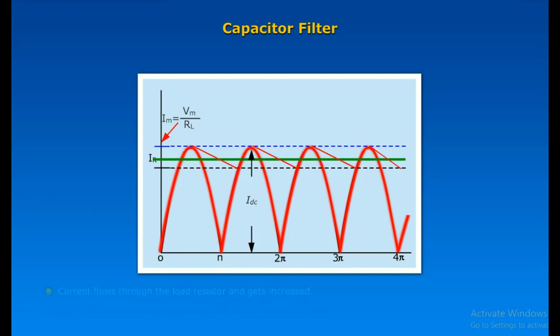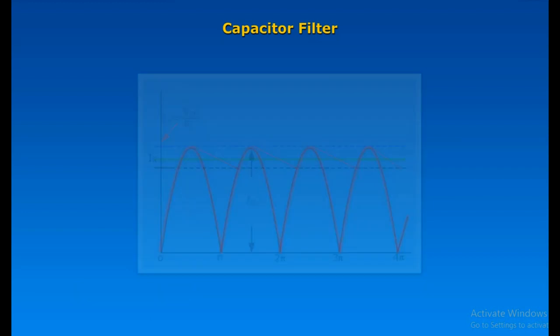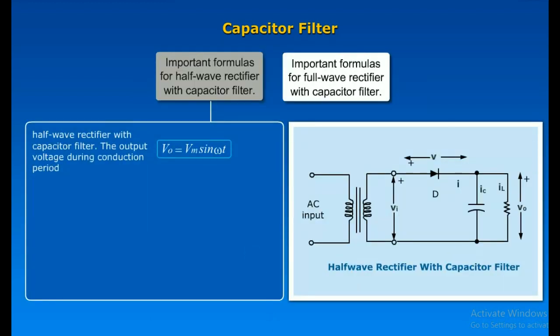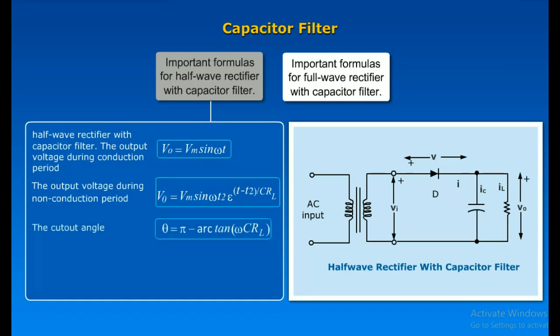Delivers energy to the load during the non-conduction period. Current flows through the load resistor and gets increased. Ripple component is reduced. Useful for all types of rectifiers. Half-wave rectifier with capacitor filter: The output voltage during conduction period is given. The output voltage during the non-conduction period is given. The cut-out angle is given. Ripple factor is given.